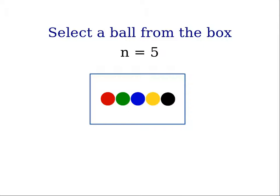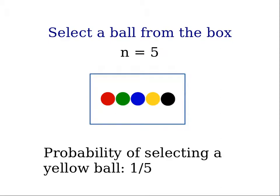So we put our hand in the box and grab a ball, then the probability of selecting a ball which is yellow is 1 divided by 5. Similarly, the probability of selecting a red ball is also 1 divided by 5, or 20%.